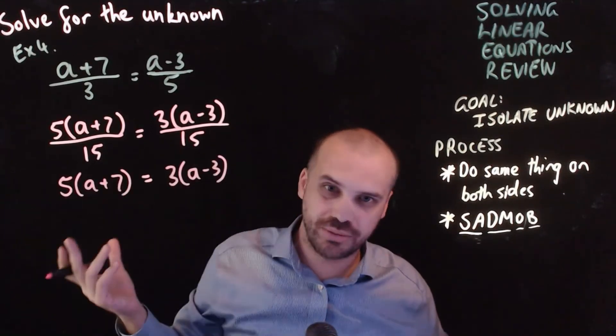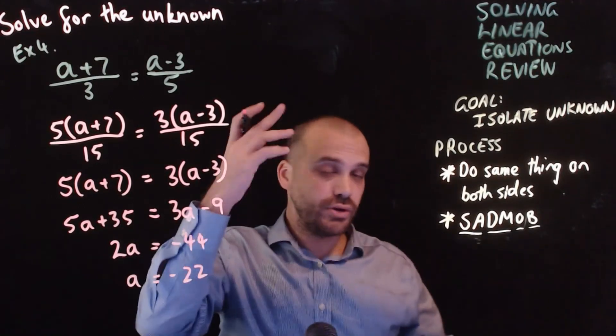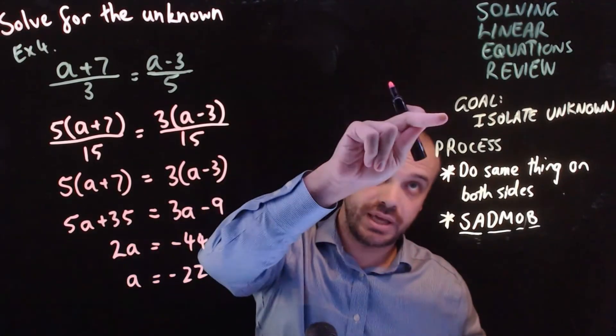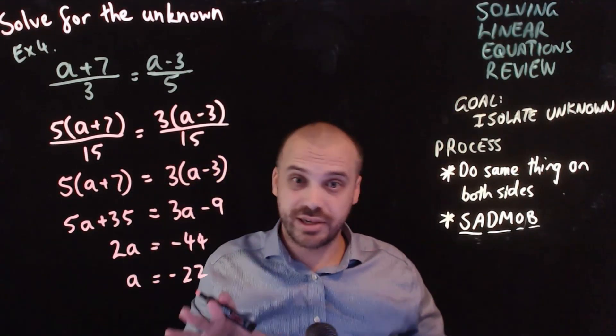And you're left with... Now, once it looks like that, distributive law on both sides, rearrange, answer. All right. That's it. Solving linear equations review. Keep your goal in mind. We're trying to isolate whatever unknown we have. And then just don't break any rules.